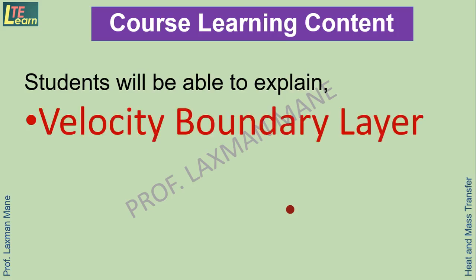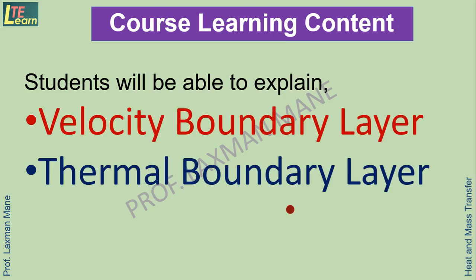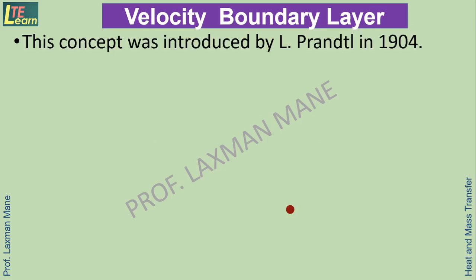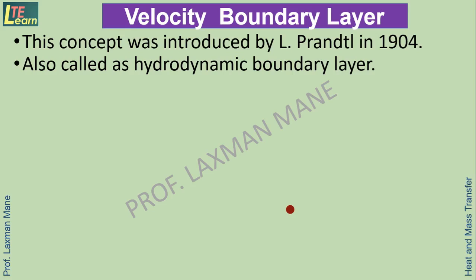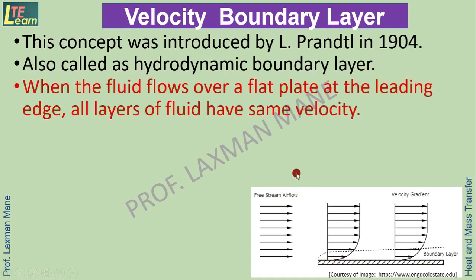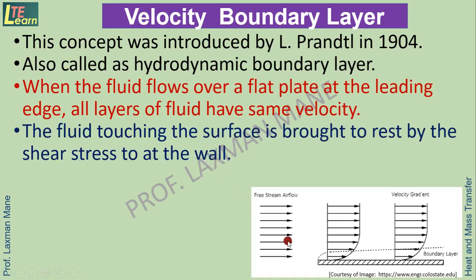Velocity boundary layer: this concept was introduced by L. Prandtl in 1904. This is also called the hydrodynamic boundary layer. In this diagram, we can see a free stream of air flowing over a flat plate. When the fluid flows over a flat plate, at the leading edge, all layers of fluid have the same velocity.